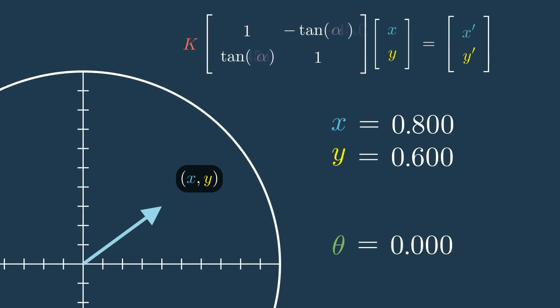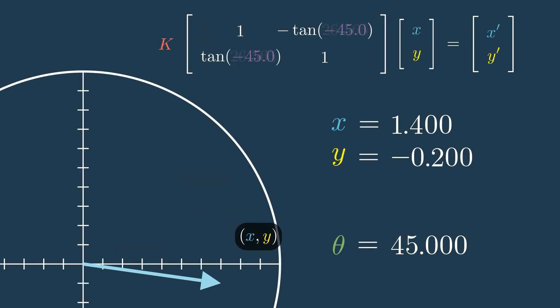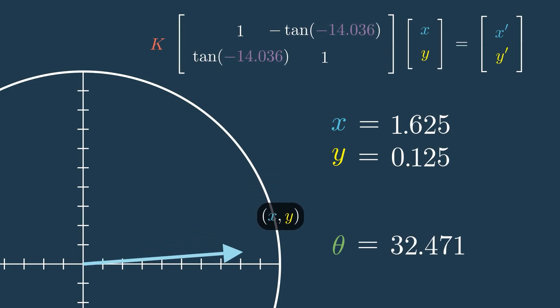Going backwards, if we have the x and y coordinates of a vector, we can also use this algorithm to find the angle and the magnitude of the vector.